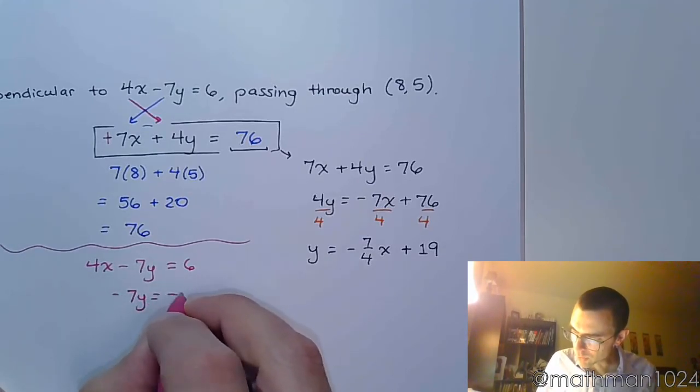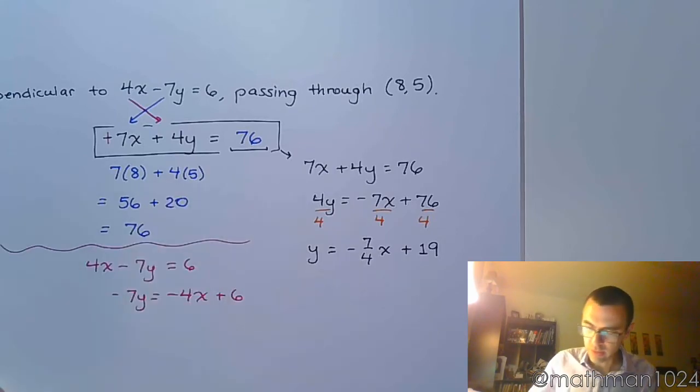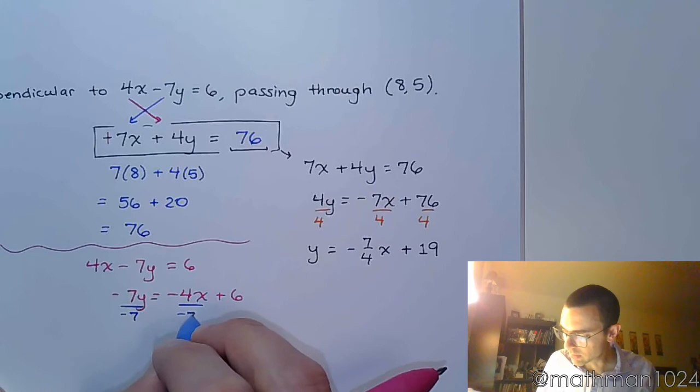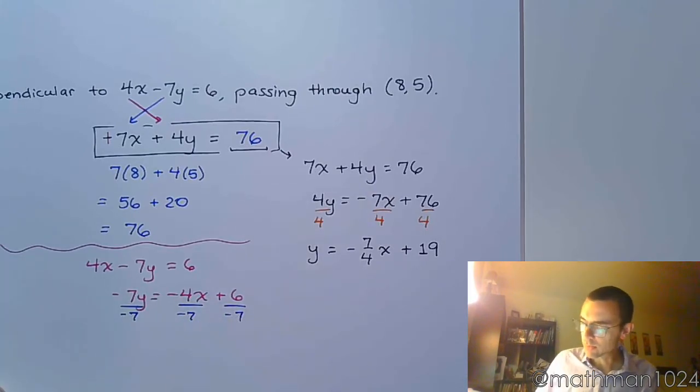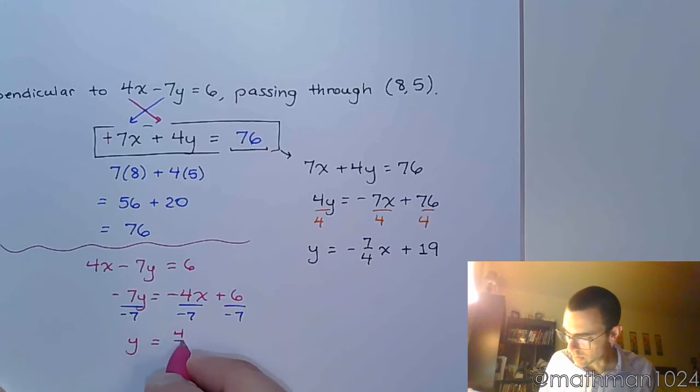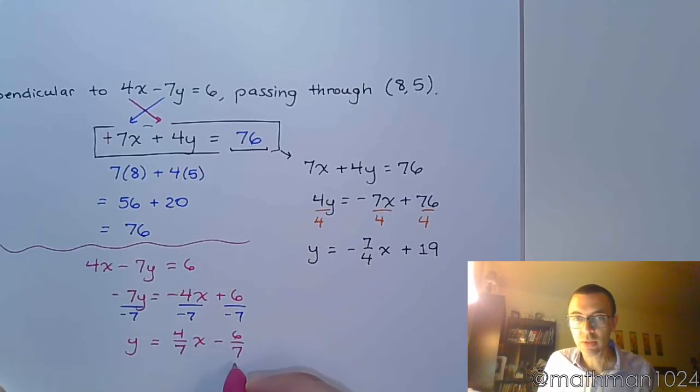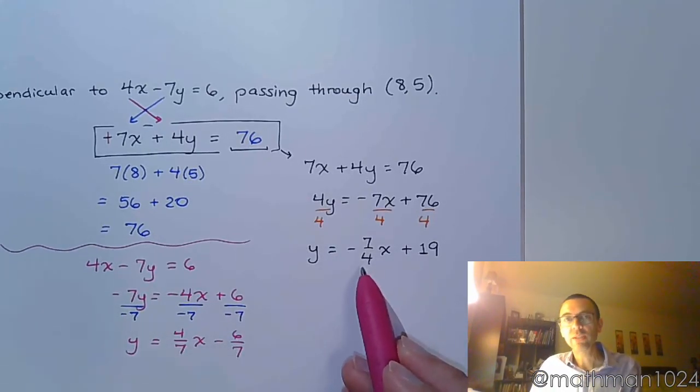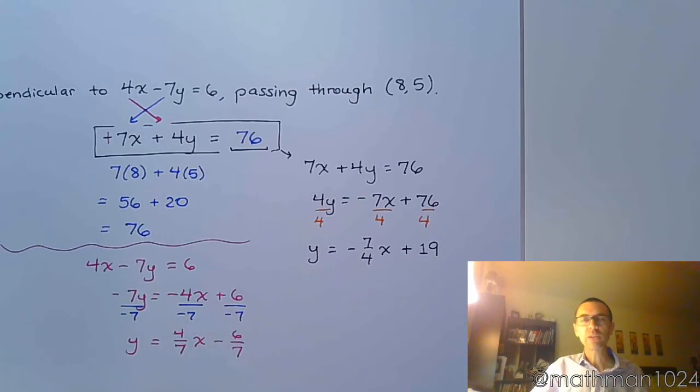In this one I would subtract 4x to the other side and then I would have to divide everything by negative 7 like this. So we have y is equal to positive 4 sevenths x minus 6 over 7. Now look at the slopes. This slope is 4 over 7 and this slope is the negative reciprocal, so it all checks out.